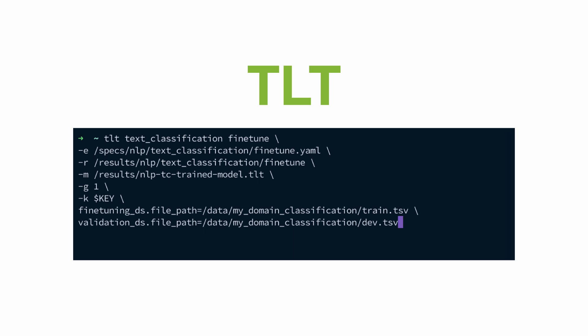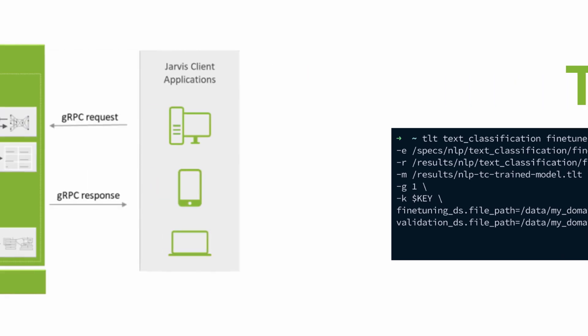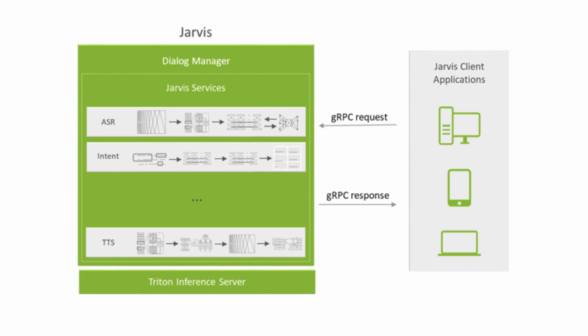This would look something like this. In the terminal, you just use the command 'tlt text-classification fine-tune', give it some parameters and also the paths to your new training and validation data for your specific domain. And that's all that we need. Now let me show you how we can actually use those services.